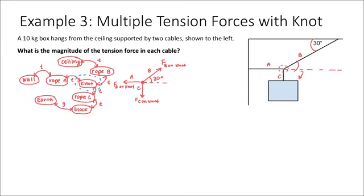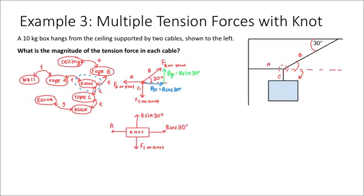What I'm going to do now is redraw my force diagram after I split vector B, or force B, into its x and y components. Pause the video and see if you can split vector B into its x and y components and redraw the force diagram yourself. The x component of B is B cosine 30, and the y component would be B sine 30, where B is the tension in that rope.